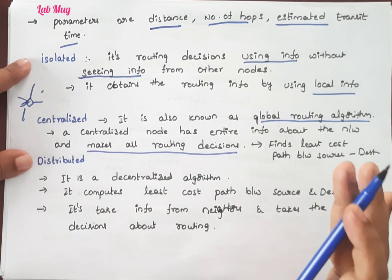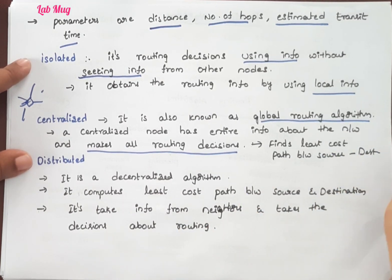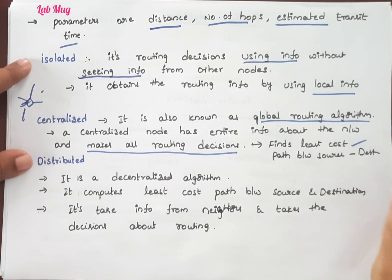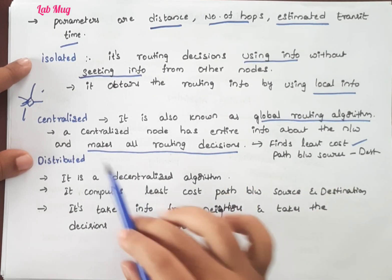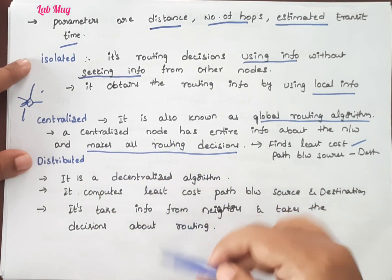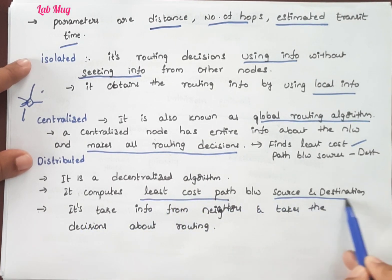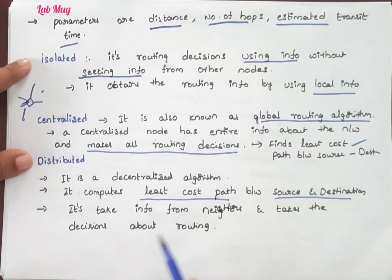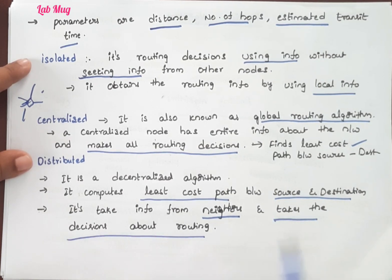In centralized routing, all routing decisions are made by the centralized node based on information from all nodes. The main goal is to find the least cost path between source and destination. The next type is distributed — also called decentralized — which is the opposite of centralized. In distributed routing, it computes the least cost path using routing information obtained from its neighbors.